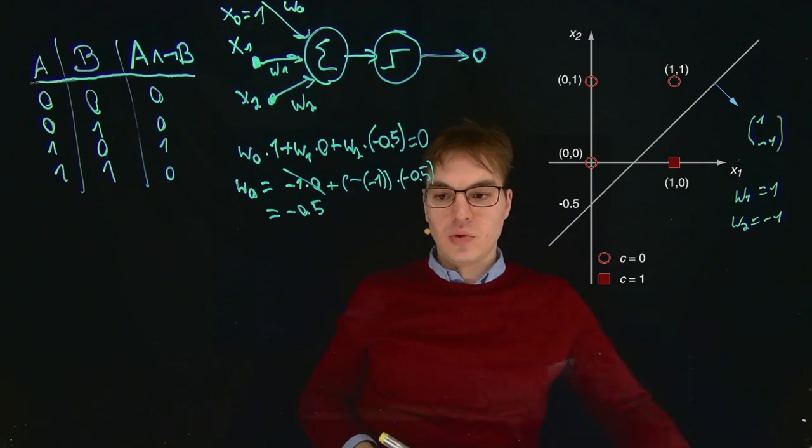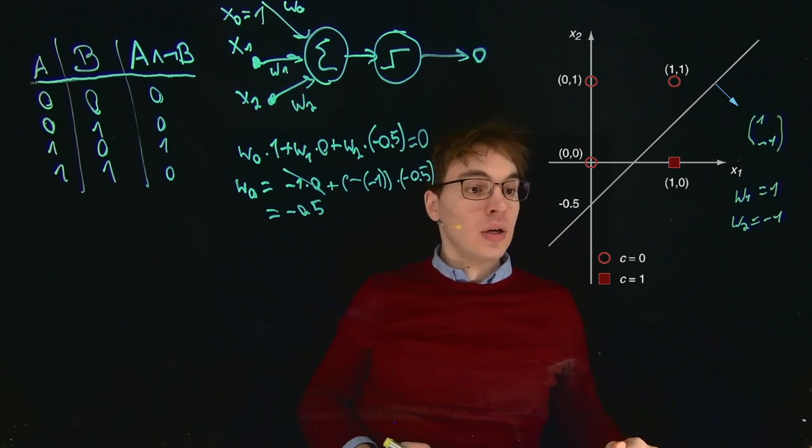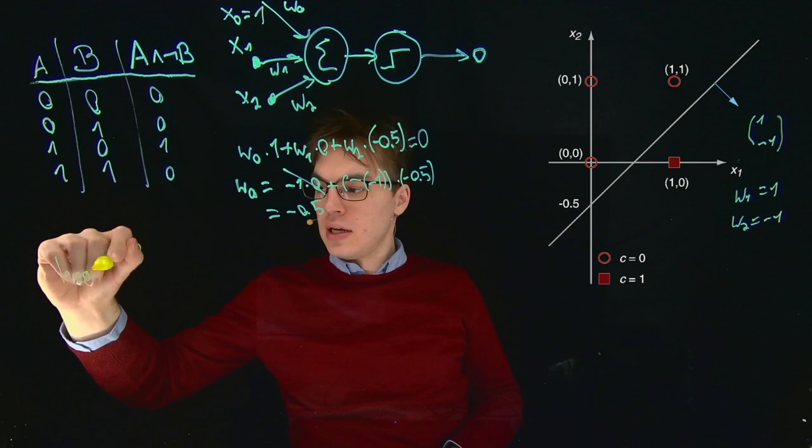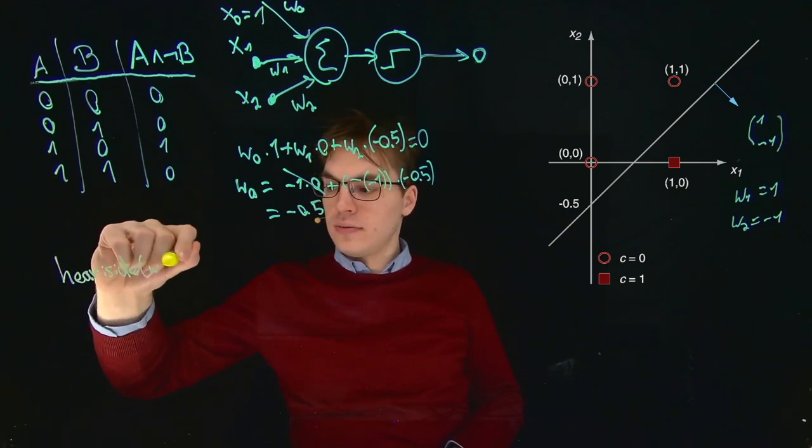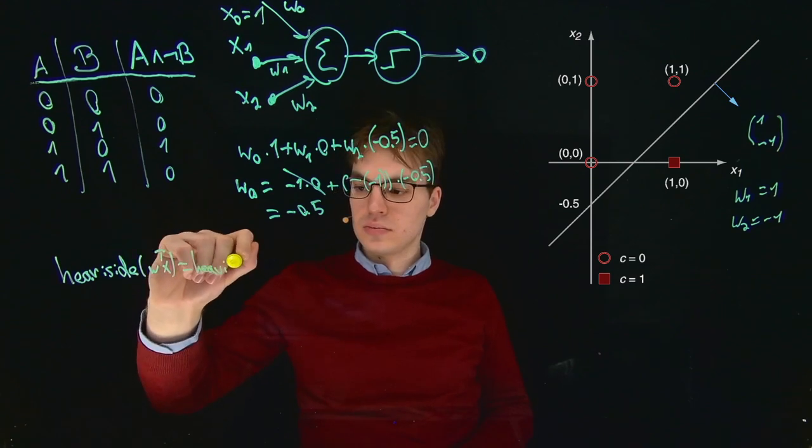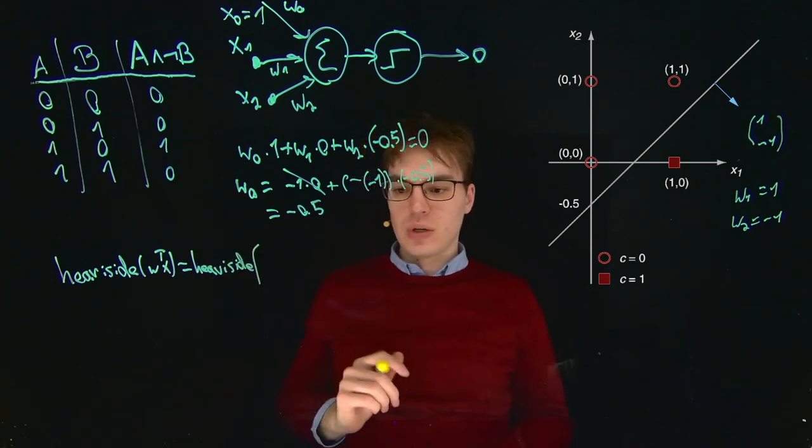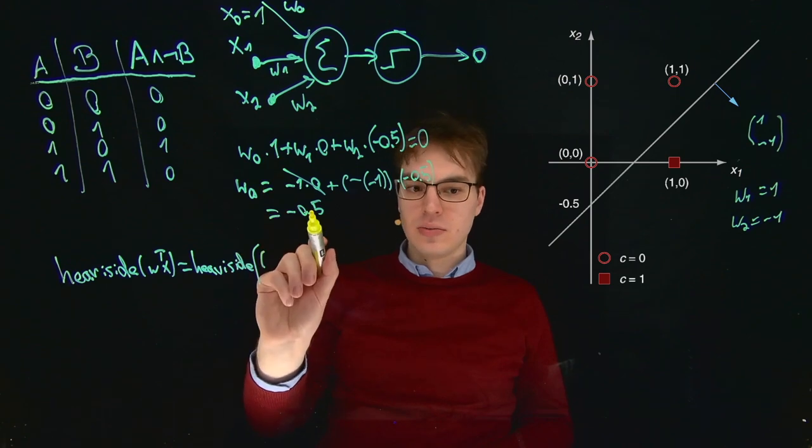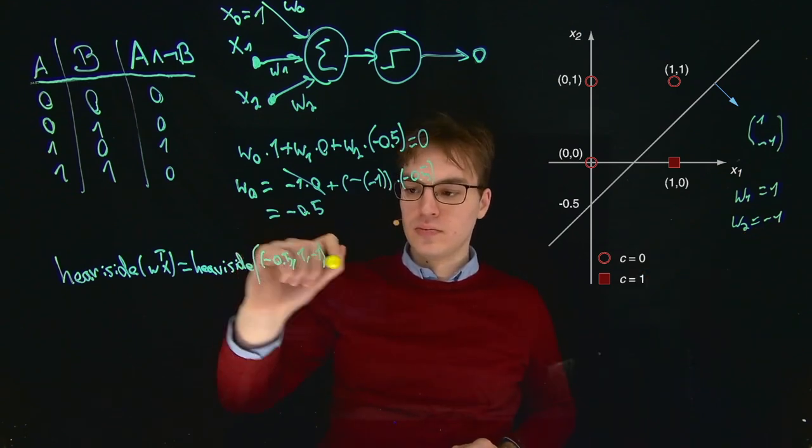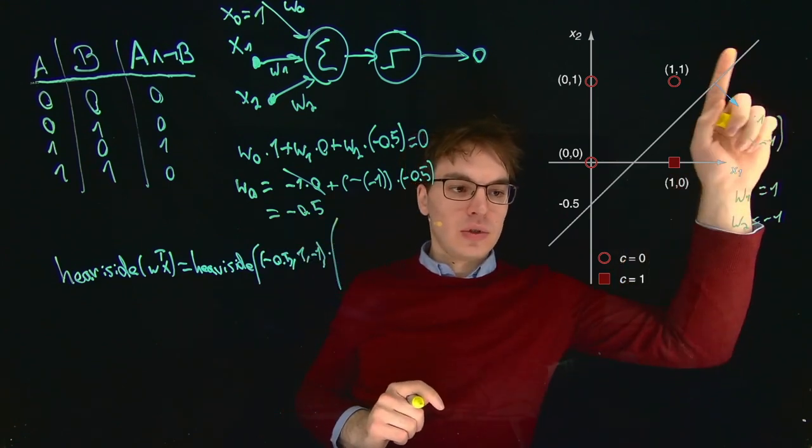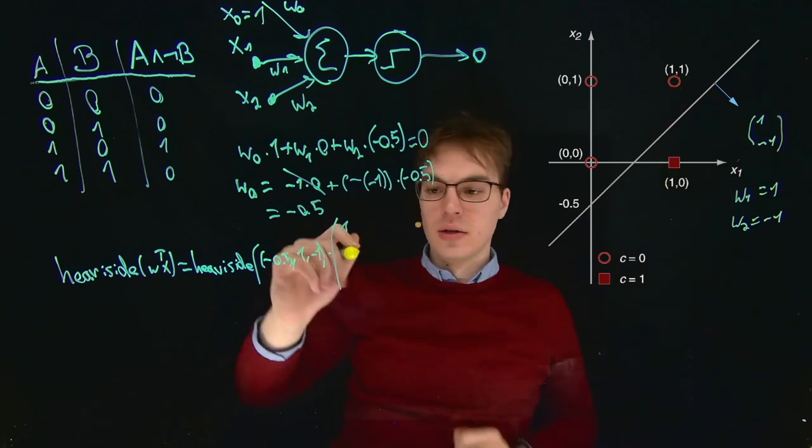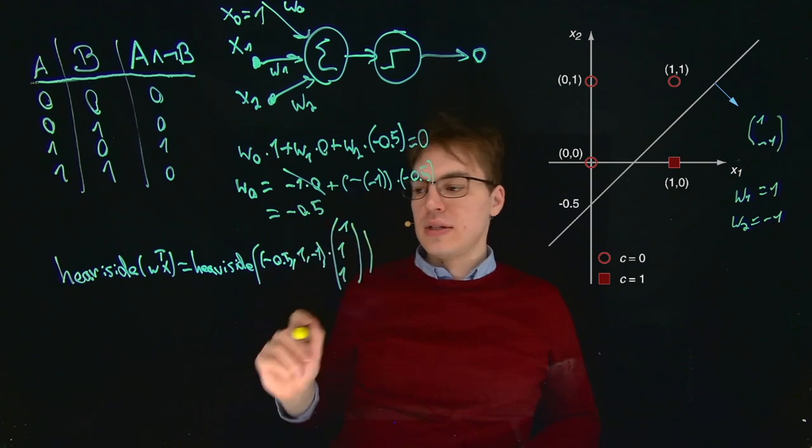So I want to do this exemplary for one point. Let's maybe choose this one. We should get a value of 0, let's see. What we need to do is compute Heaviside of W transposed X. So our W vector consists of W0, W1, and W2, times our X vector. For this point, X0 is always 1, and then we have 1 and 1 for X1 and X2.